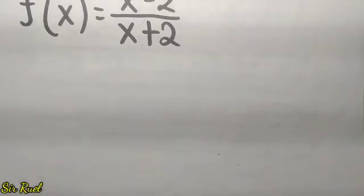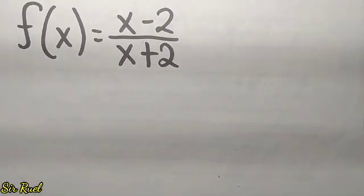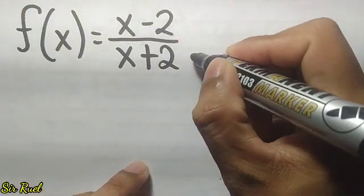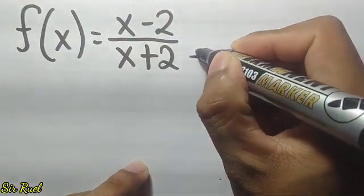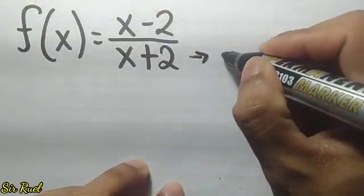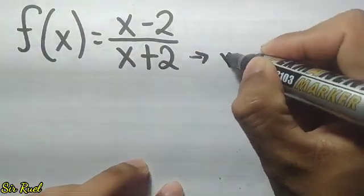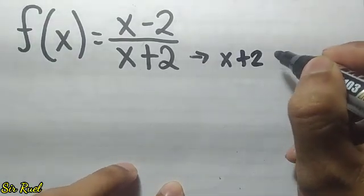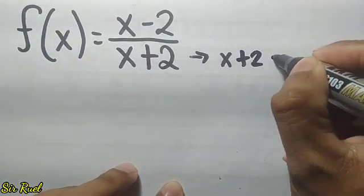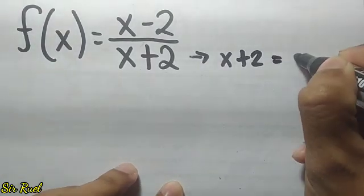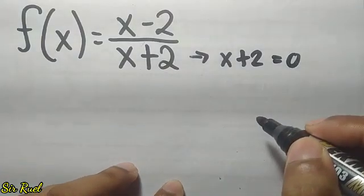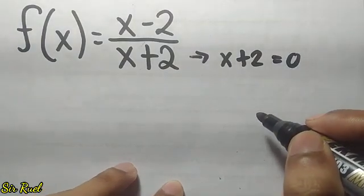First, we take the denominator x plus 2. We take this denominator and equate it to 0. Then solve for x.